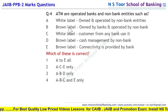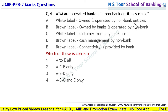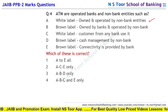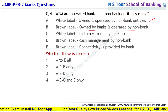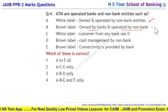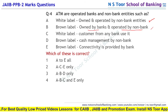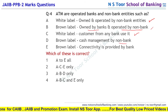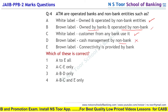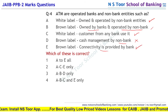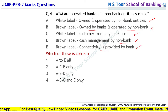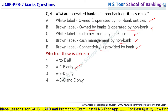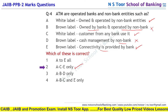Ek-ek statement dekhte hain: White label owned and operated by non-bank entities — ye to correct statement hai. Brown label owned by banks and operated by non-banks — ye statement correct nahi hai. White label: customer from any bank can use it — yes, this is correct. Brown label: cash management done by non-bank — ye galat ho gaya. Brown label: connectivity is provided by bank — ye correct statement hai. To galat kaunse hue? B aur D. A, C, E correct hain. Humara answer option 2 hai.